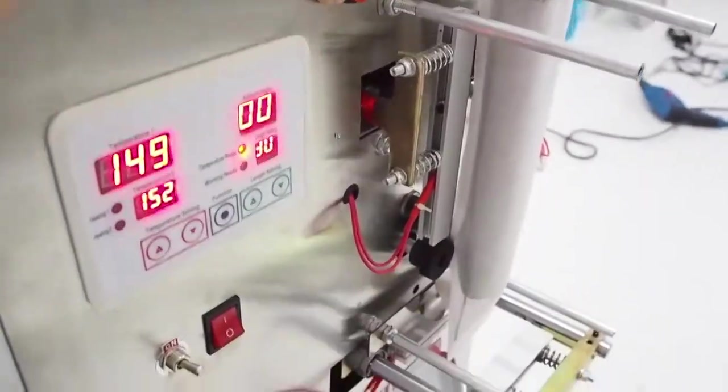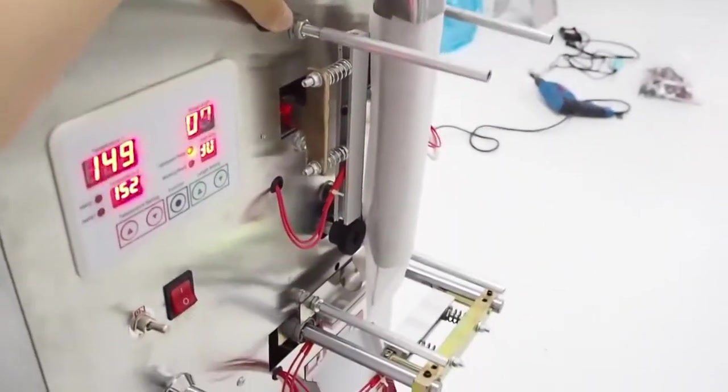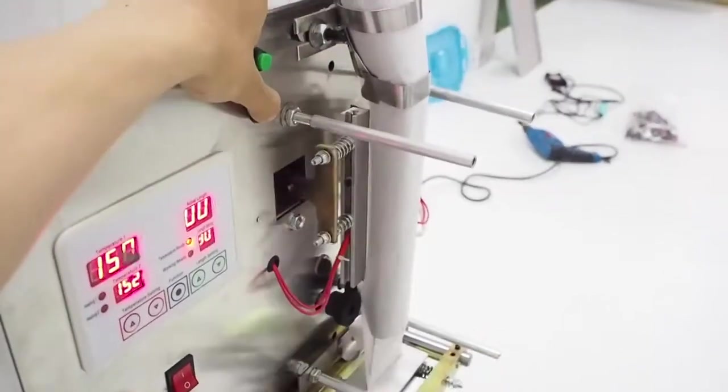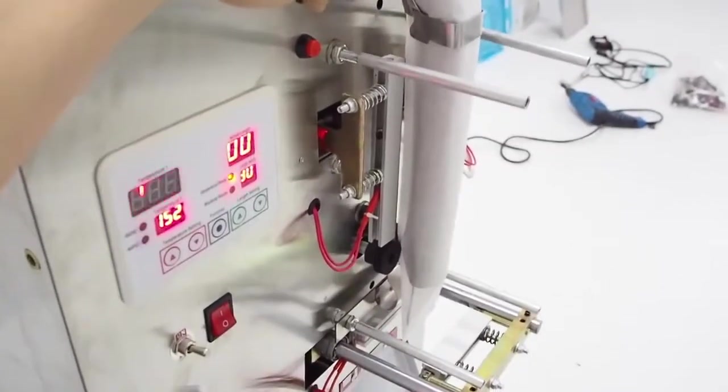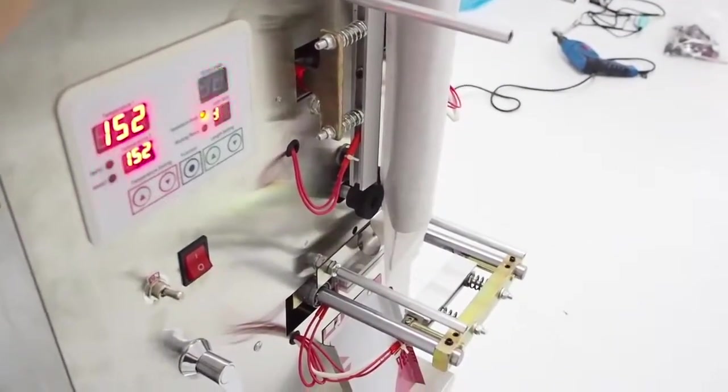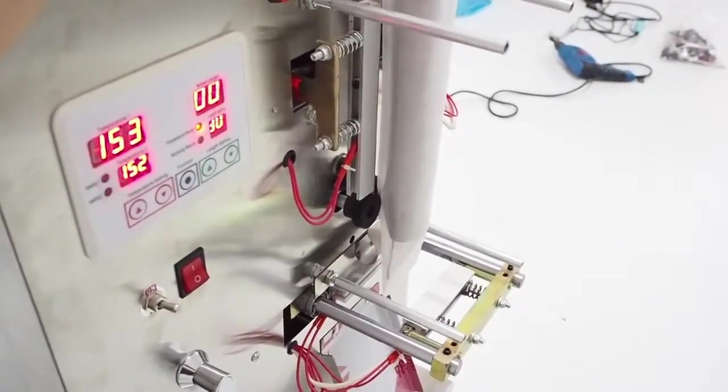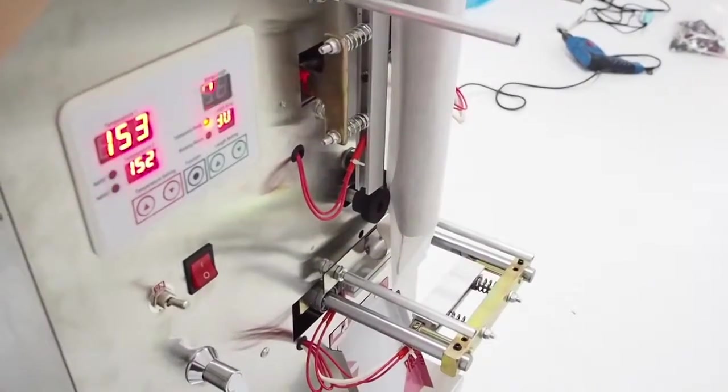You can use the red button here to test the manual cutting function. And the green button here is for the pulling wheel to pull down the bag.